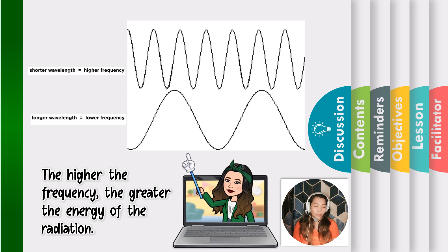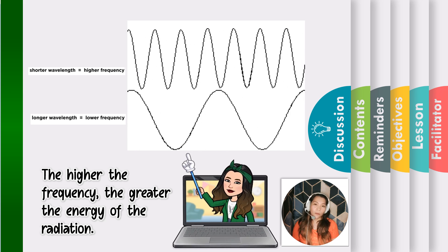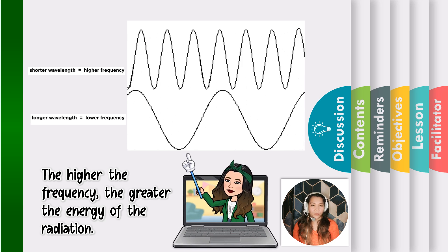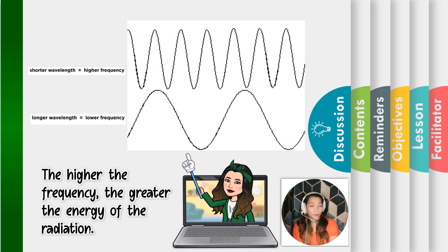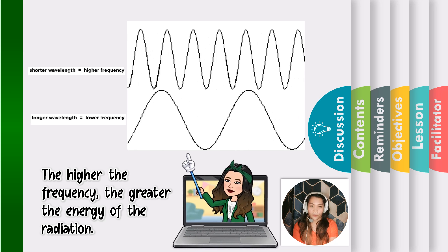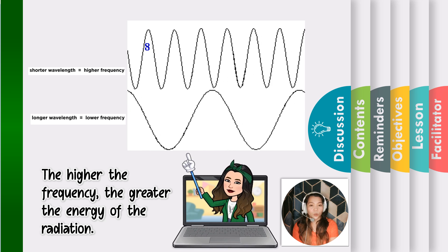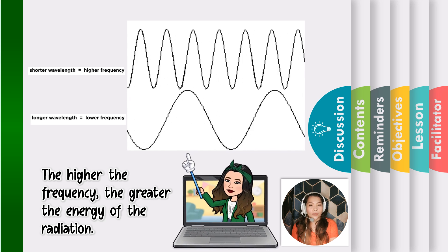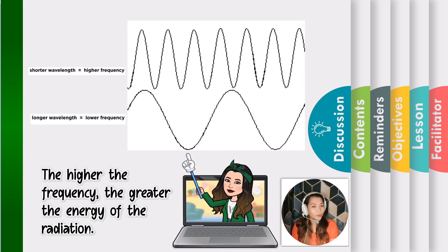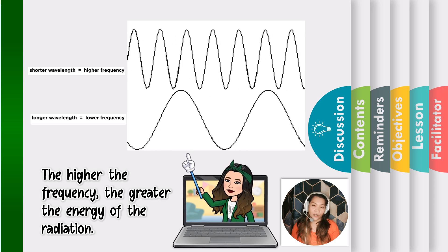Light waves have a wavelength, which is the distance between their tips, and a frequency, which is the number of waves that pass by a point in a given amount of time. Frequency is also a very important parameter because it is related to the energy of the electromagnetic radiation. The wavelength and frequency are inversely proportional: the shorter the wave, the more waves can pass by per second, resulting in a higher frequency. In other words, the higher the frequency, the greater the energy of the radiation.